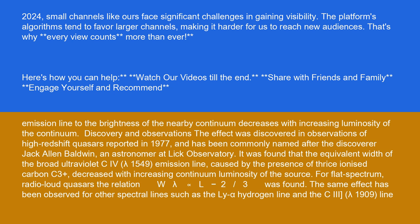It was found that the equivalent width of the broad ultraviolet C4 lambda 1549 emission line, caused by the presence of thrice ionized carbon C3+, decreased with increasing continuum luminosity of the source.